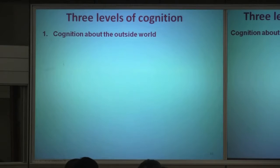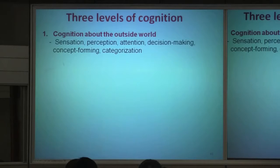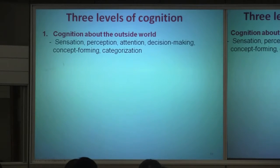We have cognition about the outside world — sensation, information from sensation, or motor action — so it depends on our perception of the outside world. This includes sensation, perception, attention to a particular part of the information, and decision-making.